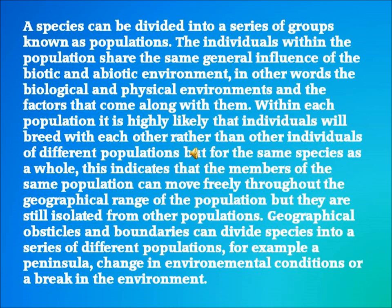A species can be divided into a series of groups known as populations. Individuals within the populations share the same general influence of the biotic and abiotic environment — the biological and physical environments and the factors that come with them. Within each population, individuals are highly likely to breed with each other rather than with individuals of different populations of the same species. Members of the same population can move freely throughout the geographical range of the population but are still isolated from other populations. Geographical obstacles and boundaries can divide species into different populations — for example, a peninsula, a change in environmental conditions, or a break in the environment.